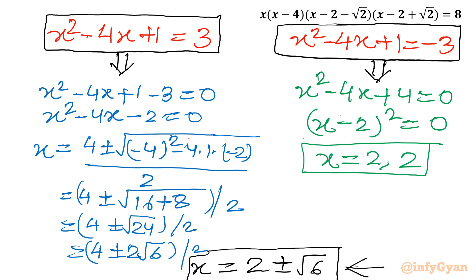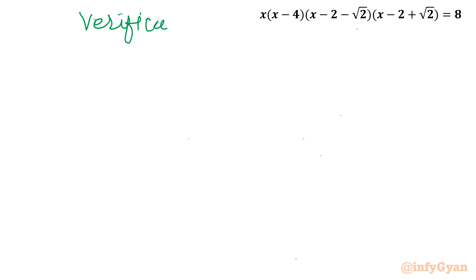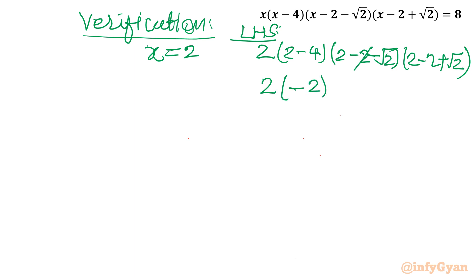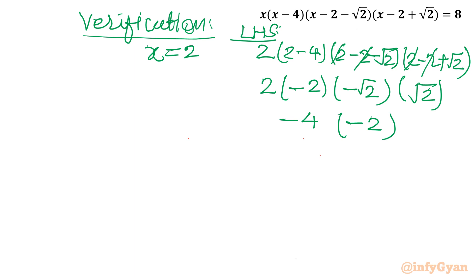Let's verify x = 2. Substituting into the LHS: 2 × (2 − 4) × (2 − 2 − √2) × (2 − 2 + √2). The terms 2 and −2 cancel in both brackets, leaving (−√2) and (+√2). So the product is 2 × (−2) × (−√2) × (+√2) = 2 × (−2) × (−2) = −4 × (−2) = 8, which equals the RHS. Hence verified.